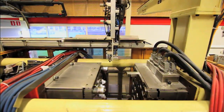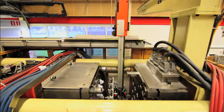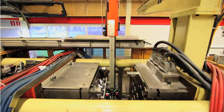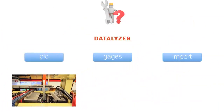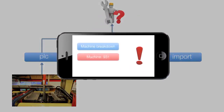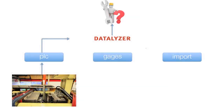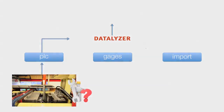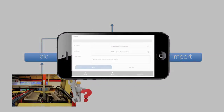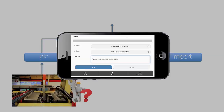Most of the time, the injection moulding machines run unattended. When a machine goes down, the information is sent through the PLC and the operator or engineer gets a signal on his mobile device — this can be any mobile device or tablet. He then goes to the machine to solve the problem. When the problem is solved, the cause of the problem and the corrective actions are registered in Datalyzer through the mobile device.